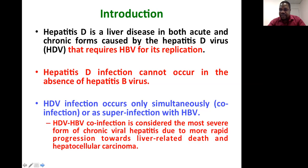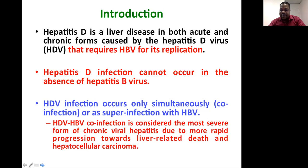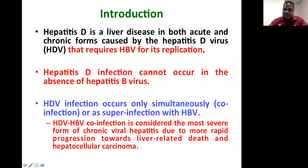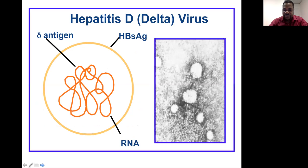Hepatitis D infection occurs only simultaneously — called co-infection with hepatitis B — or someone with hepatitis B may contract hepatitis D later, which is called super infection. Serologic testing allows you to identify whether it was a co-infection, meaning the patient contracted both viruses at the same time, or the person had hepatitis B before and was then superimposed with hepatitis D. Hepatitis D and B co-infection is considered the most severe form of chronic viral hepatitis due to more rapid progression toward liver-related death and hepatocellular carcinoma.